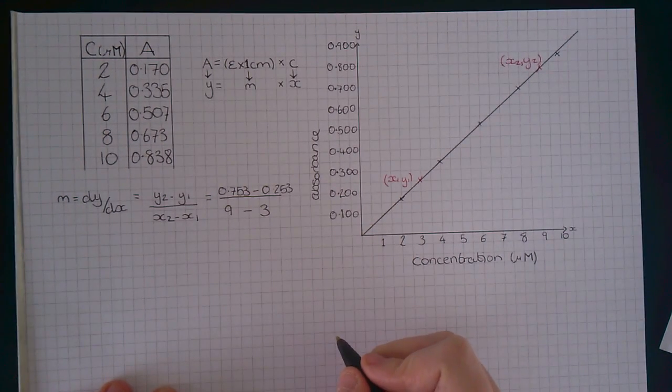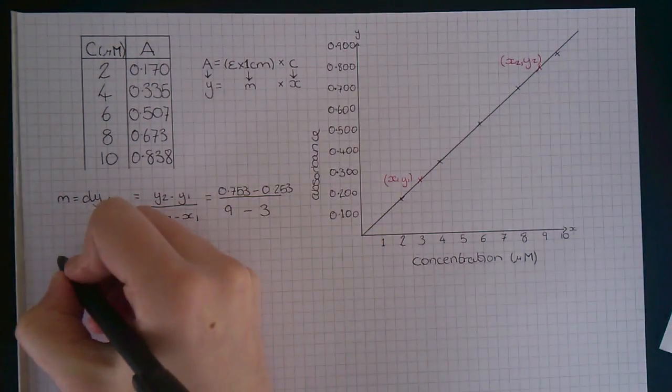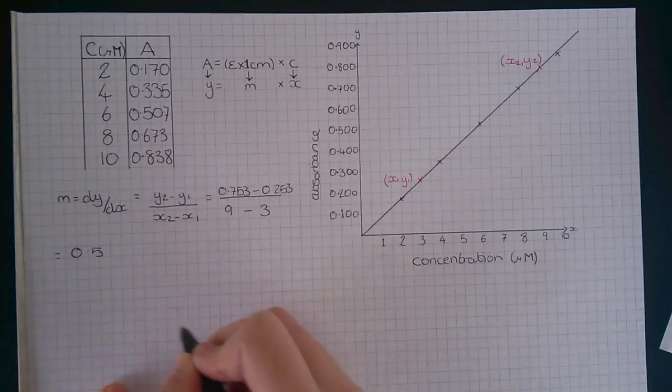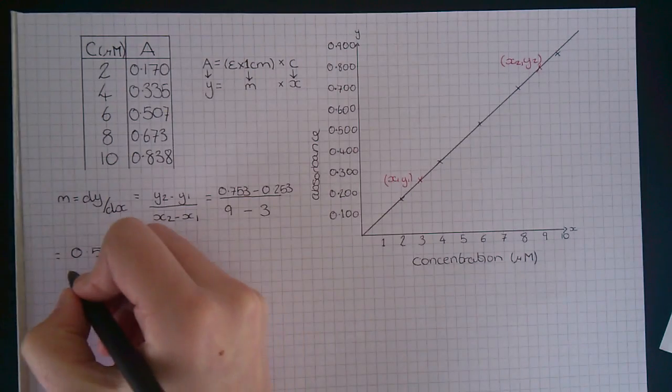0.753 minus 0.253 equals 0.5. And 9 minus 3 equals 6.